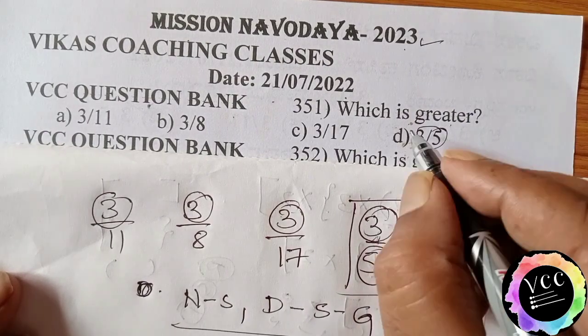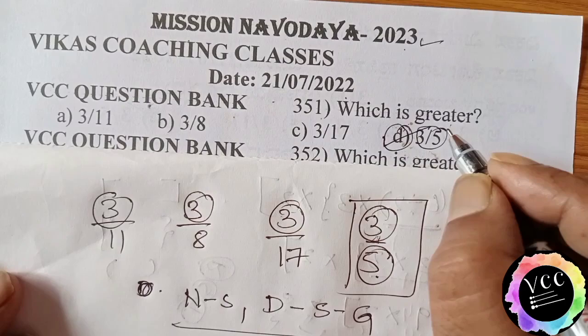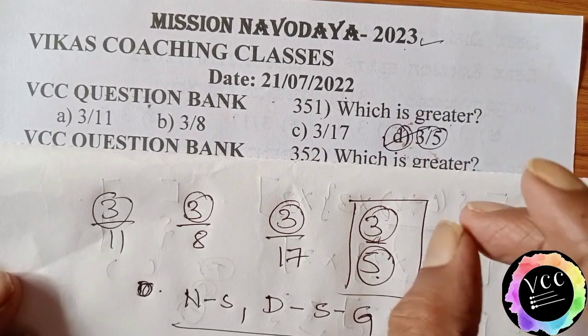Means 3 by 5 is the greater fraction. D option is the correct answer.